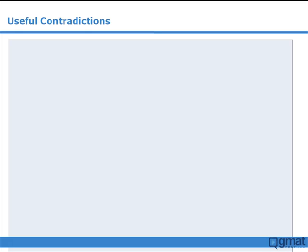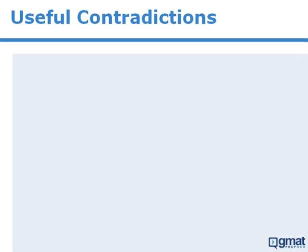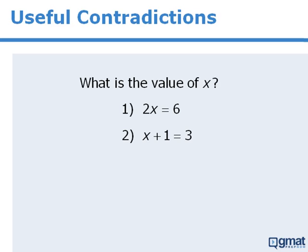In this lesson, we will examine a feature of data sufficiency questions that will sometimes help you identify mistakes you may have made. We will examine this important feature by way of example.